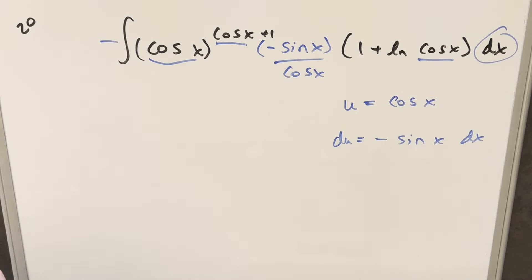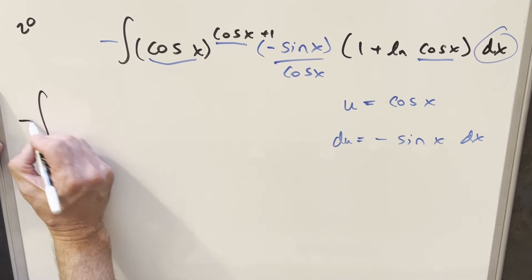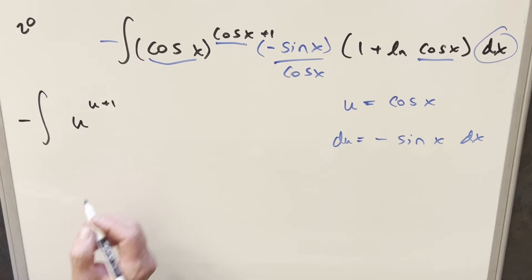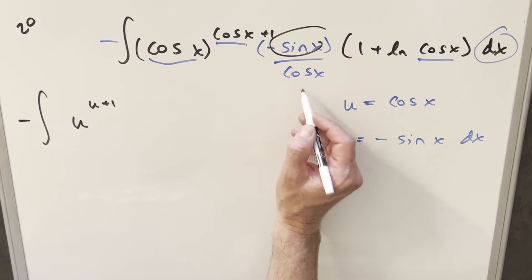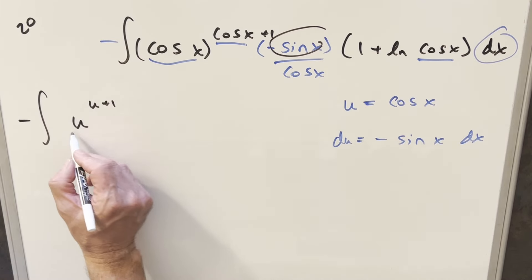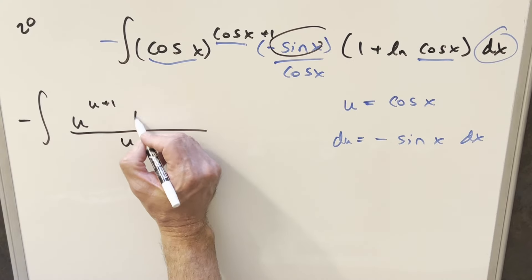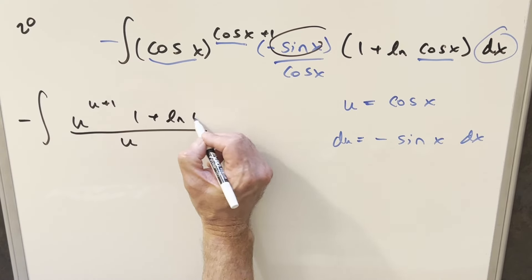And so then we'll go ahead and substitute minus in front. This is going to become just u to the u plus 1 now. Again, this is going to be part of the du, but the cosine here in the denominator, I can put this down here as just u. And then this other part's going to become 1 plus natural log of u.